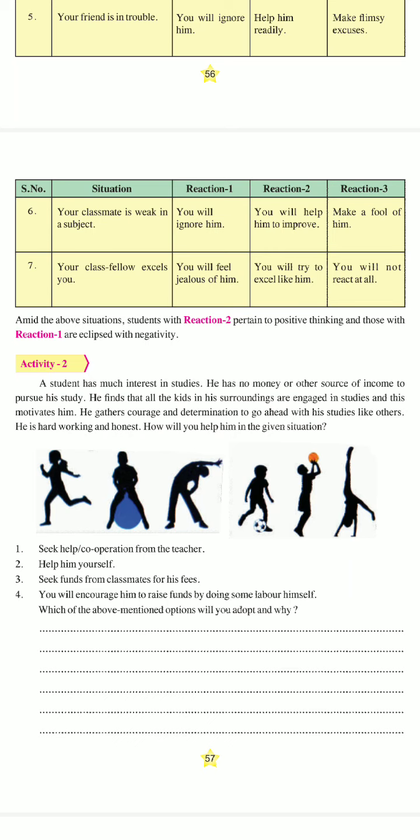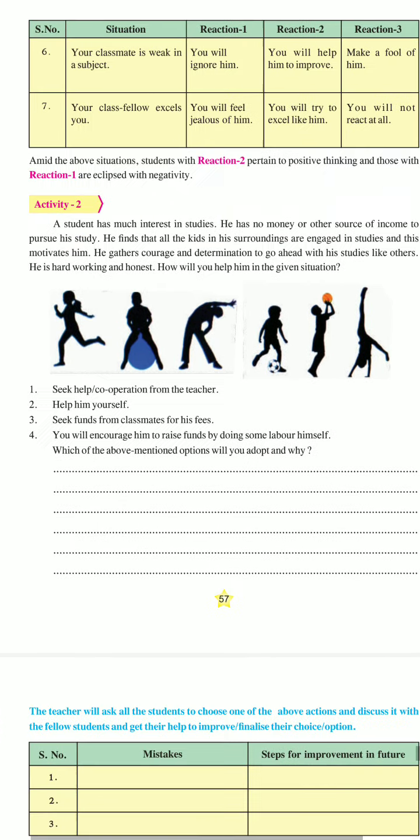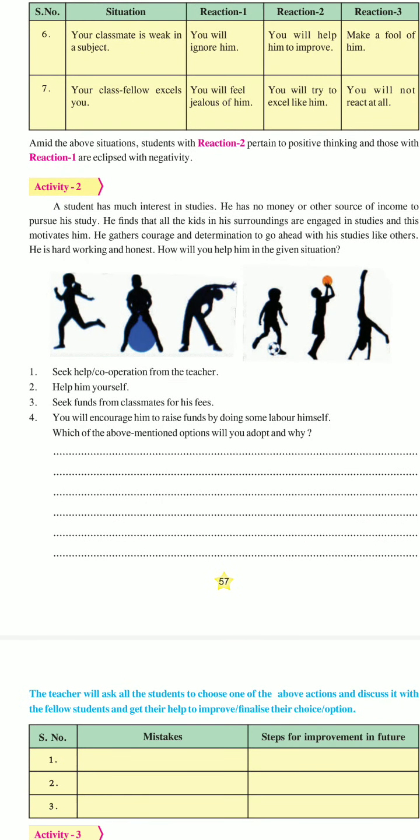Next situation: if your friend is in trouble, Option 1: you will ignore him. Option 2: you will make flimsy excuses — flimsy means weak or trivial — saying you can't help. Next situation: your classmate is weak in a subject. Option 1: ignore it. Option 2: help the friend improve in that particular subject. Option 3: make a fool of him.